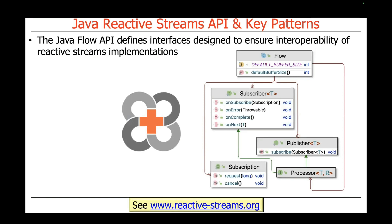There are four primary interfaces defined as part of the Flow class — they're all nested interfaces. The purpose of doing this is to ensure interoperability between Reactive Streams implementations. In practice, this means we can take things like Project Reactor or RxJava, and they can actually work together even though they have lots of differences, because they share these common interfaces that they can interact with.